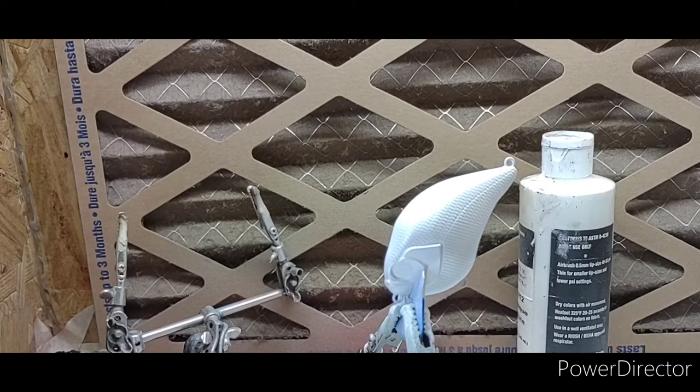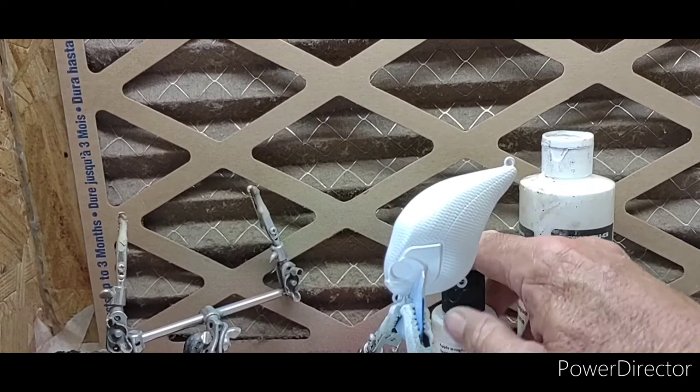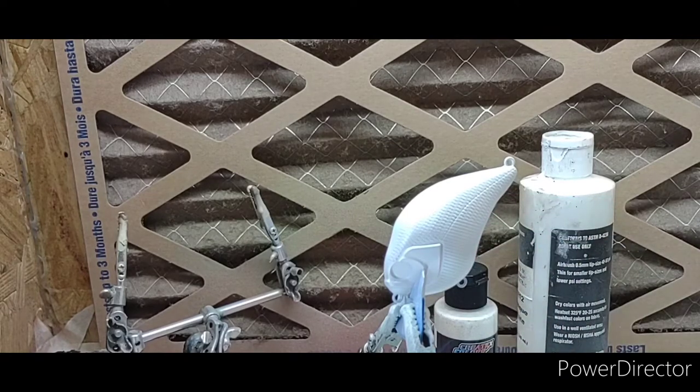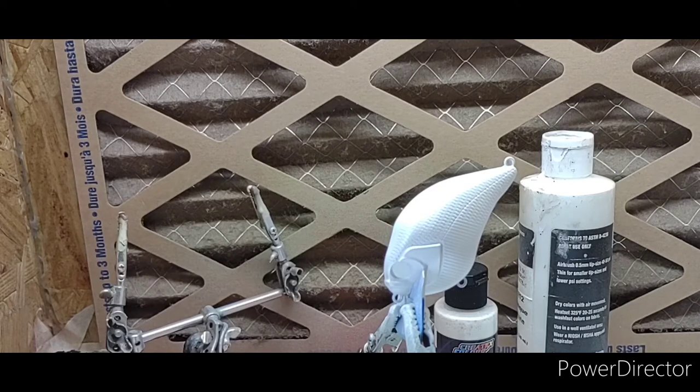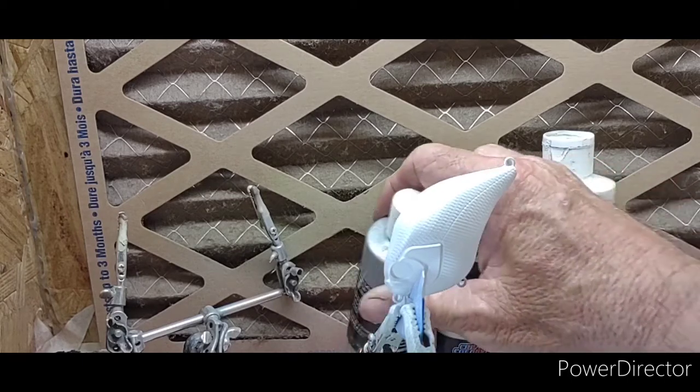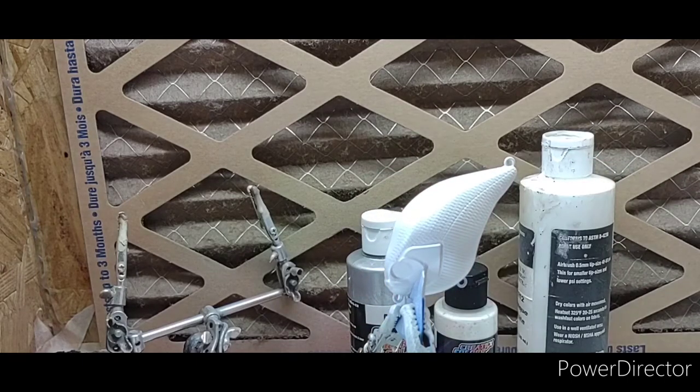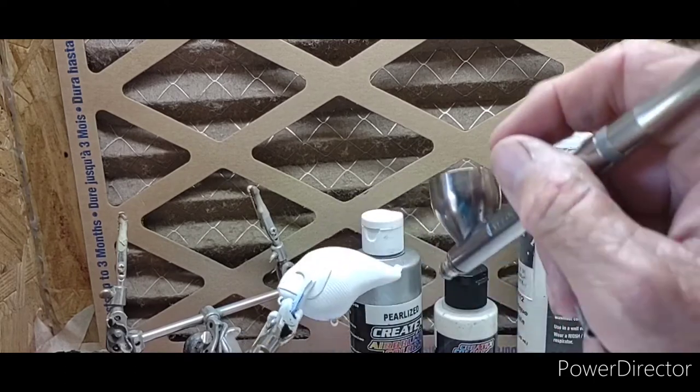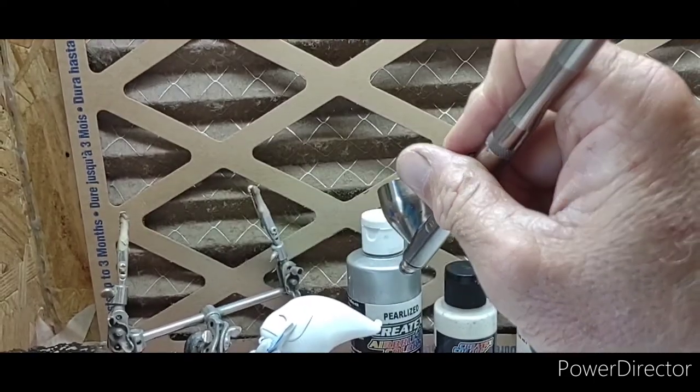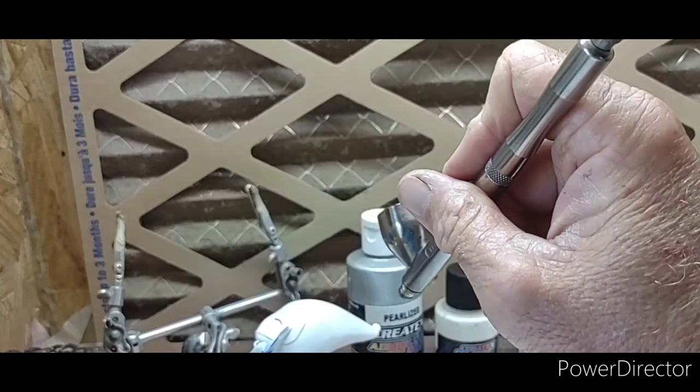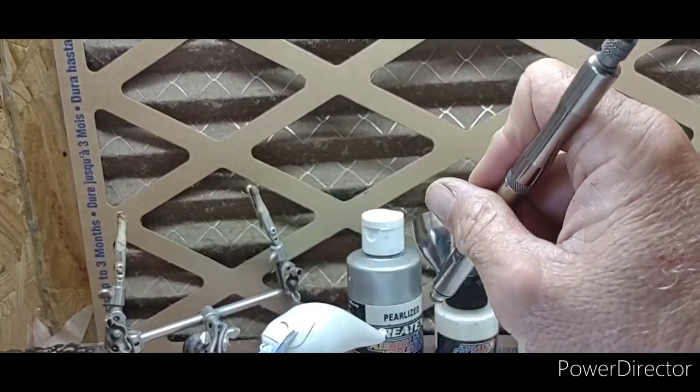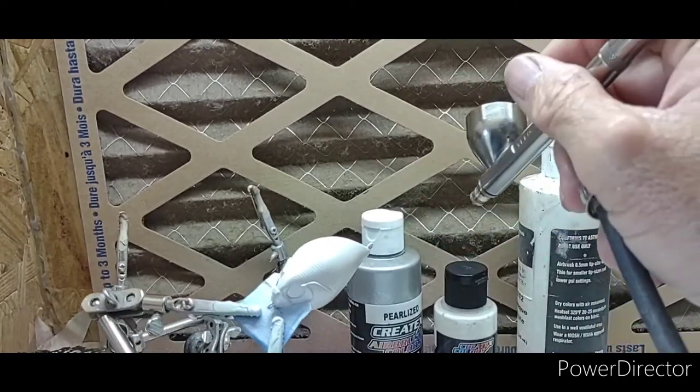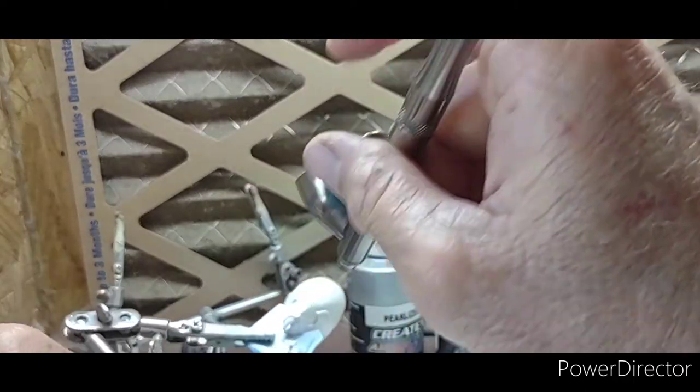So but anyway, that was the Wicked pearlized white. So now our second color is gonna be our Createx pearlized silver. And then we're gonna take this and we're just gonna go on the sides with this silver and leave that bottom the pearl white.